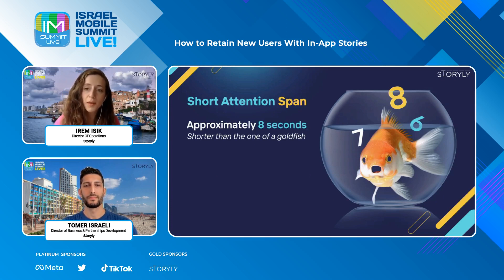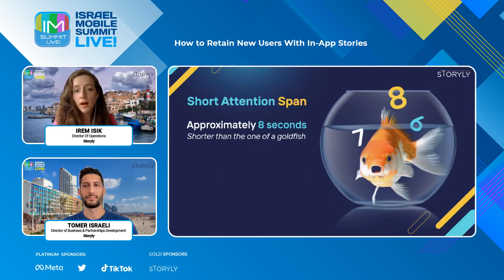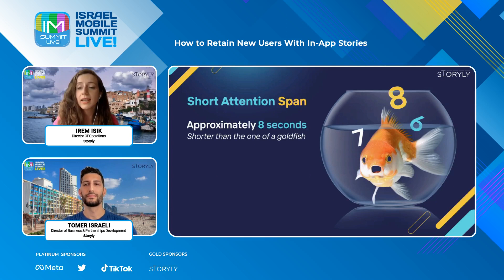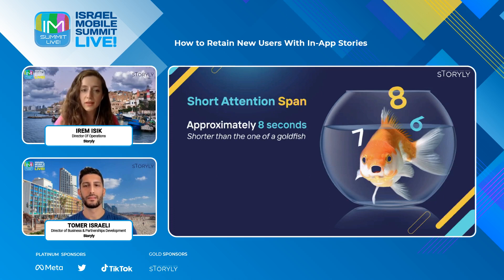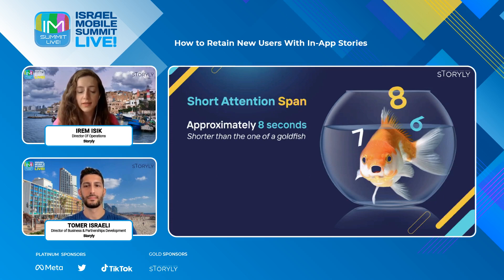Before jumping into end user habits and insights, one thing we should note is that engagement may have different meanings for different verticals. For an e-commerce app, it can be product page views, add to favorite, or add to cart, whereas for a content or news outlet, it can be session duration or article views as important metrics for engagement. But regardless of the vertical, we can highlight several insights and challenges that would be valid for all mobile users in all verticals.